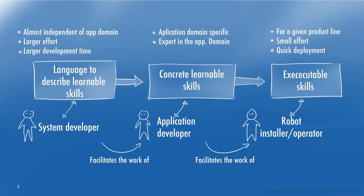On one hand, we have the system developer. The system developer is involved in the specific control aspect and control architecture, and it develops a way to specify the real application. It designs a language to describe learnable skills. In our case, this language is ETASL. The main motivation of the system developer is to make the job of the application developer easier. This is a major effort requiring a lot of time to develop, but this effort is largely independent of the specific type of application, so we can write this method off over a large number of applications.